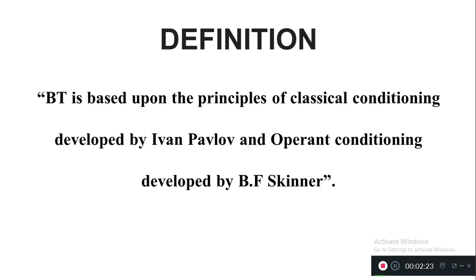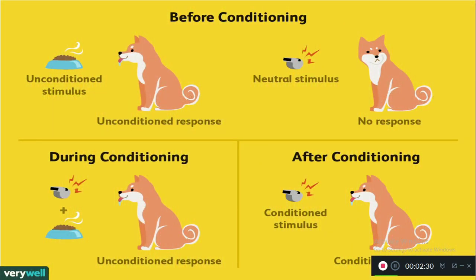Now let's see the image here. You might have studied this in your first year psychology. This theory is Ivan Pavlov's classical conditioning theory. The dog and food experiment — when food is given to the dog, the dog salivates; without food, the dog is not salivating. Pavlov conditioned the dog by giving an unconditioned stimulus paired with a conditioned stimulus, that is the bell sound. By hearing the bell sound and pairing it with the food, the dogs learn to salivate.